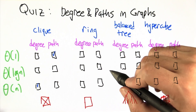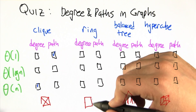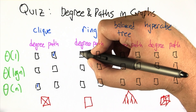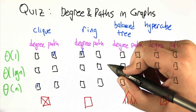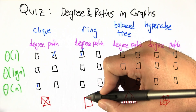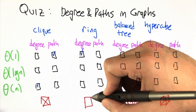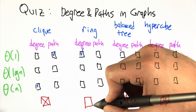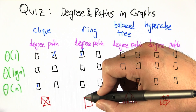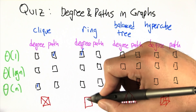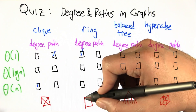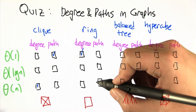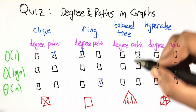Next, let's think about a ring. The degree in a ring is always 2 — all nodes have degree 2, so it's constant. But what about path length? Some nodes are nearby, but others require going all the way to the other side of the ring, which can be as large as n divided by 2. After getting further and further, you start getting closer again, so the path length is actually linear.